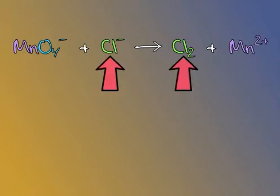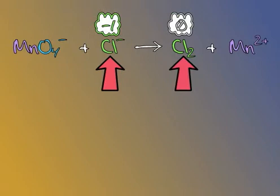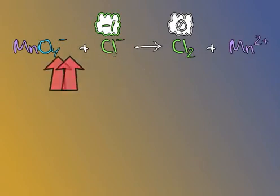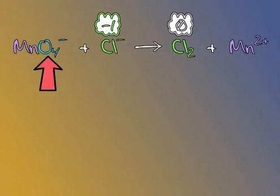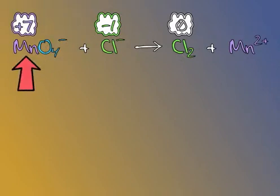Chlorine, whose oxidation state goes from negative 1 to 0, is oxidized. The oxygens in permanganate each have a minus 2 oxidation state, and since the overall molecule of permanganate has a minus 1 charge, the manganese must have an oxidation state of positive 7. During the course of this reaction, its oxidation state is reduced to positive 2.